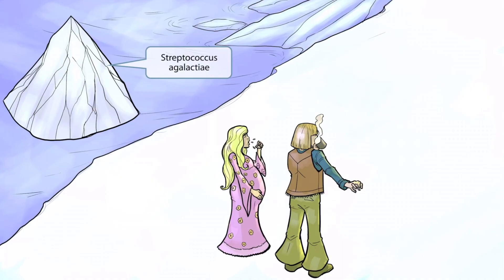In this scene, there will be a group of hippies camping near a glacier. Glacier sounds kind of like agalactiae, so in this image, it will be our symbol for Strep agalactiae — glacier, Strep agalactiae.